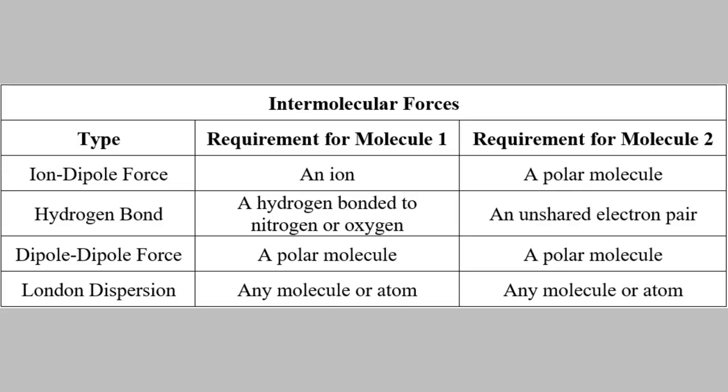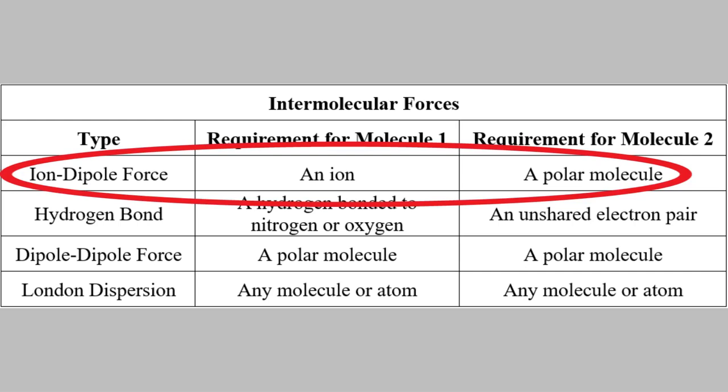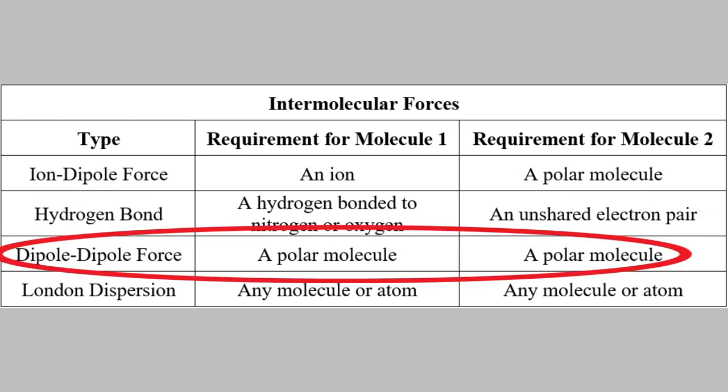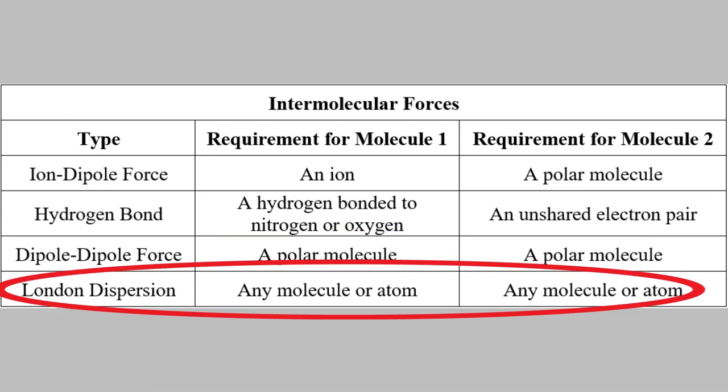Here's a summary of what we know about intermolecular forces. The strongest is the ion-dipole force, which occurs between any ion and any polar molecule. The next strongest is the hydrogen bond, which occurs between any molecule containing a hydrogen atom bonded to a nitrogen or an oxygen, and a second molecule that has an unshared electron pair. Hydrogen bonds are really an especially strong type of dipole-dipole force, which can occur between any two polar molecules. And finally, the weakest intermolecular force is London dispersion, which can happen between any two molecules, whether they're polar or not.